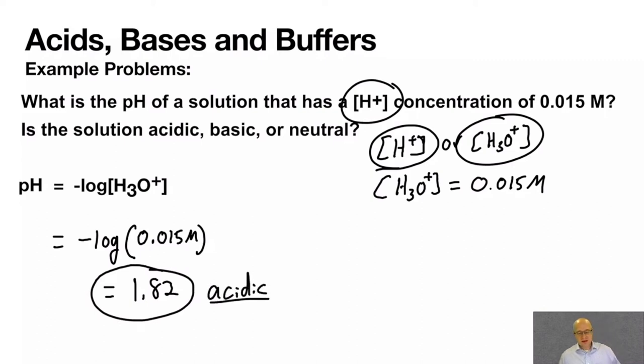Remember, in the pH scale, if you're 7, you're neutral. If you're below 7, you're acidic. If you're above 7, you're basic. And that's how the scale works.